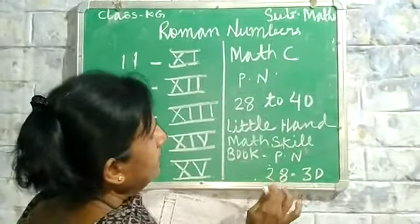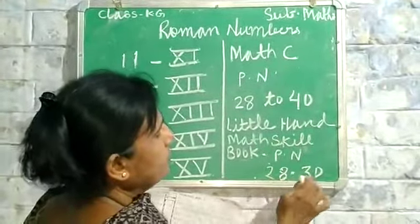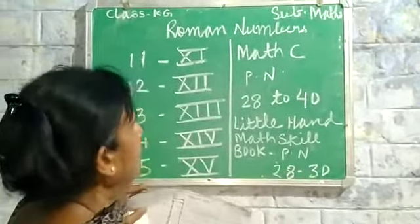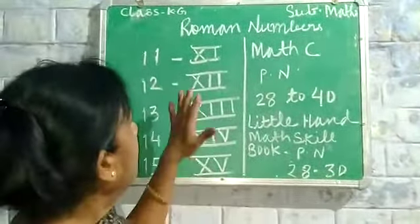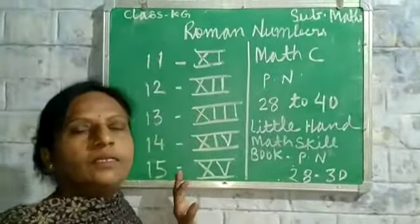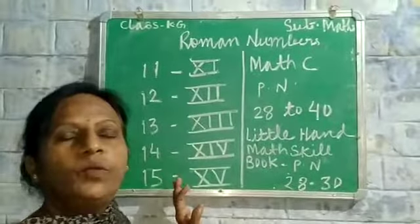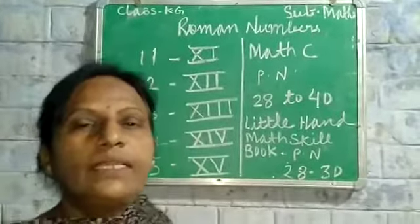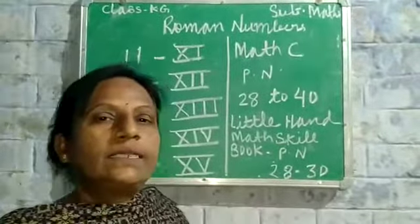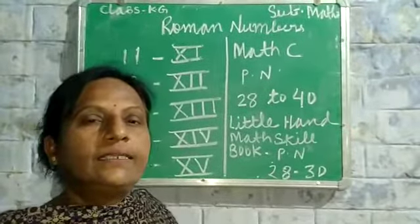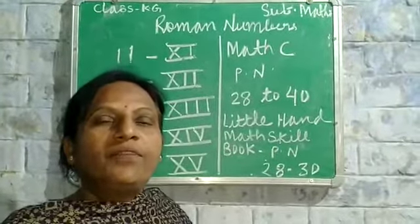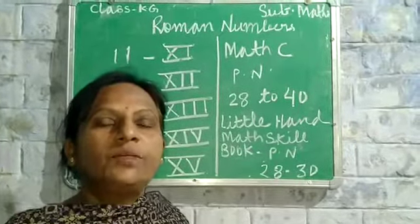Page number 28 to 30 — okay children, now you will understand the Roman numbers. Please note in your notebook and learn it in a good way. Okay children, we will see you in the next video.